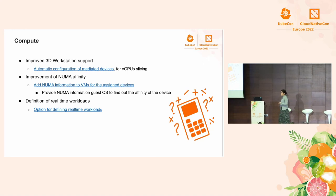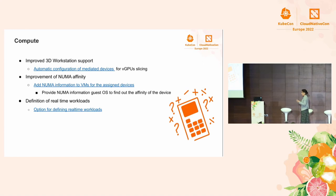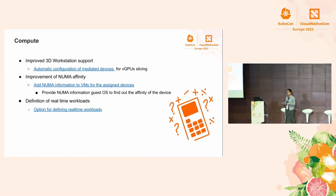One of the goals of KubeVirt is to abstract the workload definition from the different options in order to tune your VMs. One example is the real-time workload. As a user, you simply need to specify that you want to run a real-time workload — that will just be an option on the declaration of your VM. KubeVirt will automatically pick the best configuration and schedule the VM on a node with a kernel that has real-time support.